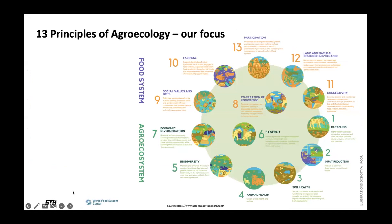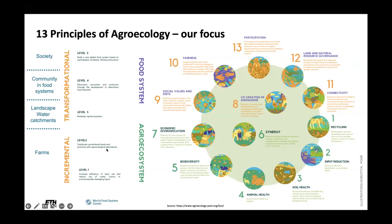This graph helps us see the interconnections between different principles. We are talking about principle three, soil health — the aim to secure and enhance soil health and functioning for improved plant growth, particularly by managing organic matter and by enhancing soil biological activities. This principle directly addresses the agroecosystem and supports incremental steps in food system transformation.